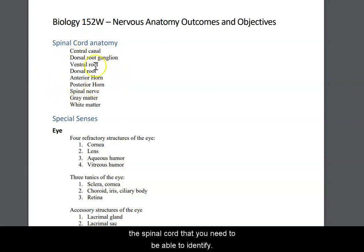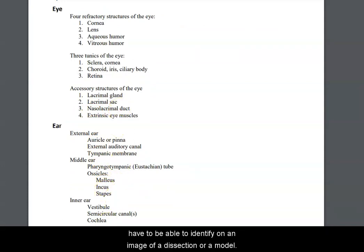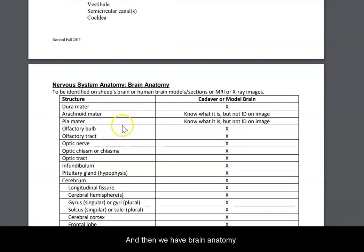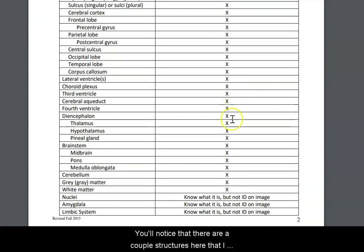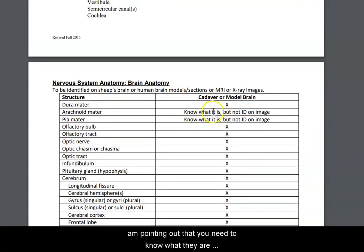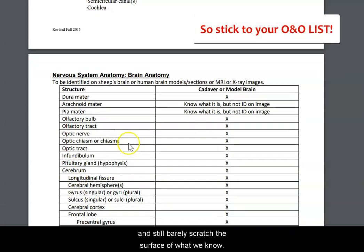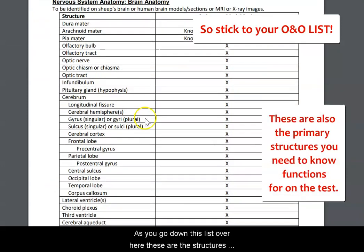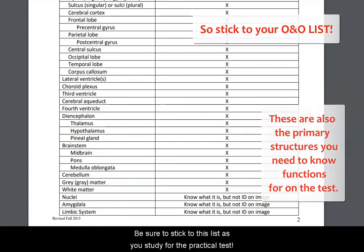These are the structures on the spinal cord that you need to be able to identify, as well as the structures on the eye and ear that you have to identify on an image of a dissection or a model. For brain anatomy, in this online course we use cadaver images through Anatomy and Physiology Revealed on Connect, as well as models of the brain. There are a couple of structures you need to know what they are but don't have to identify on an image. There are a lot of structures within the brain we are not covering — you could spend your entire career studying the brain and still barely scratch the surface. Be sure to stick to this list as you study for the practical test.